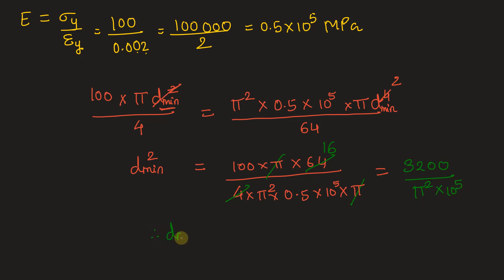Hence D minimum is under root of this value and we get it to be 0.0569. All the values are in SI unit. So we get this answer also in SI unit that is meter, SI unit of length that is meter.